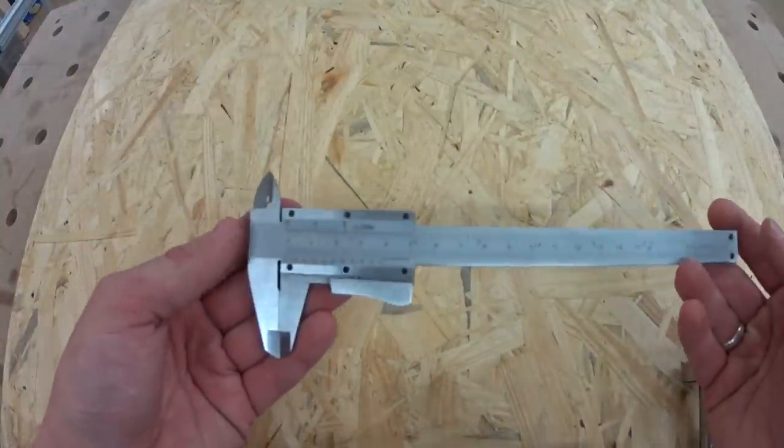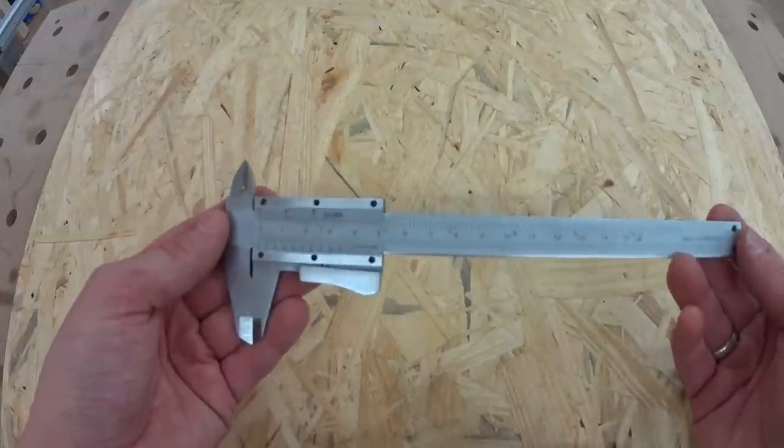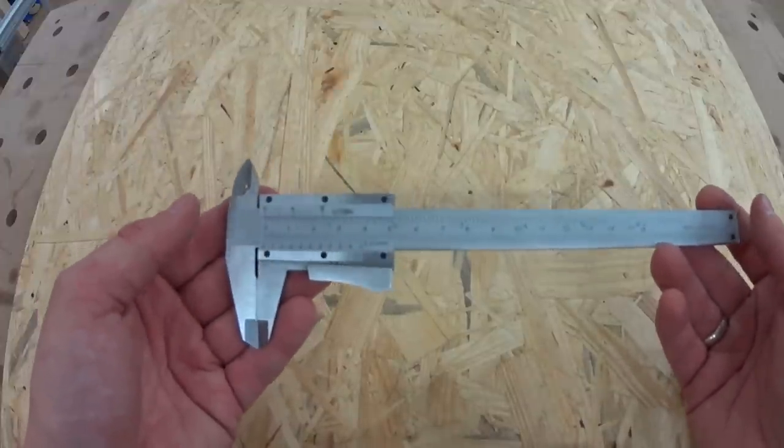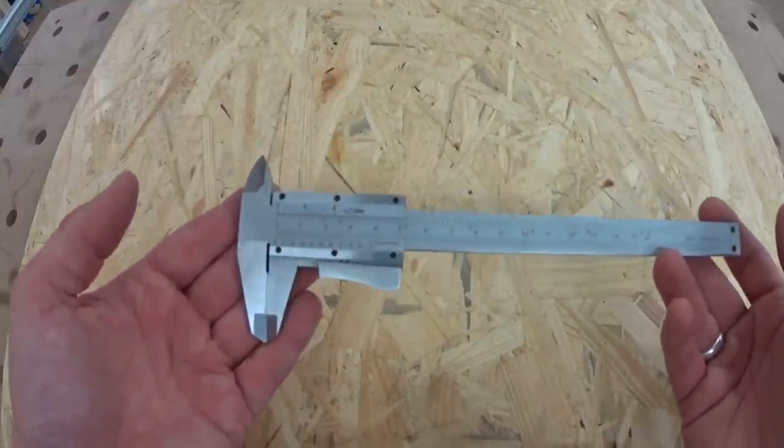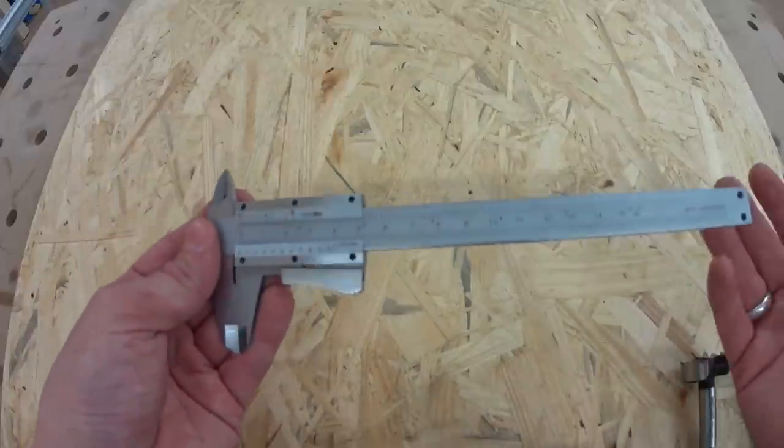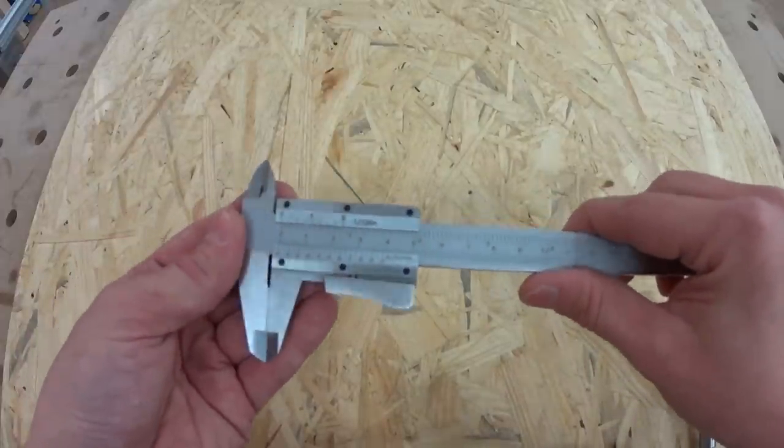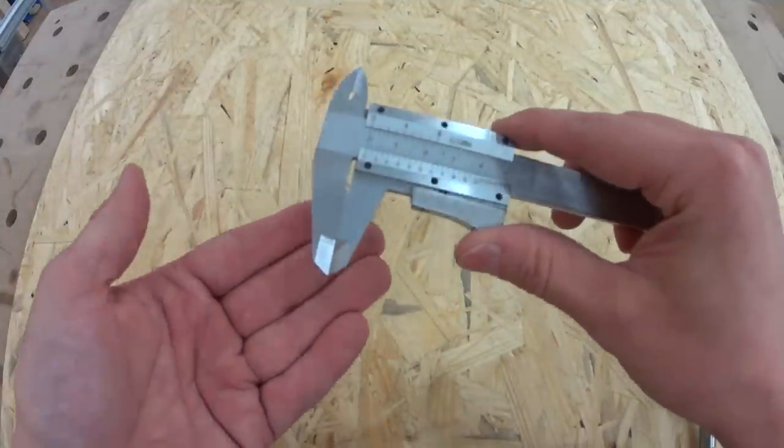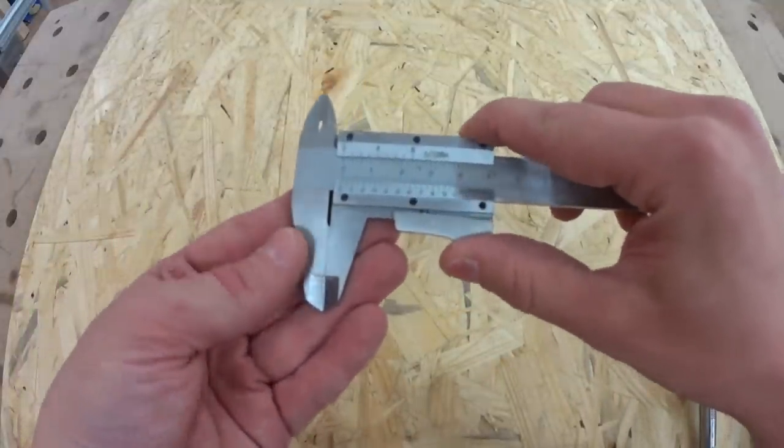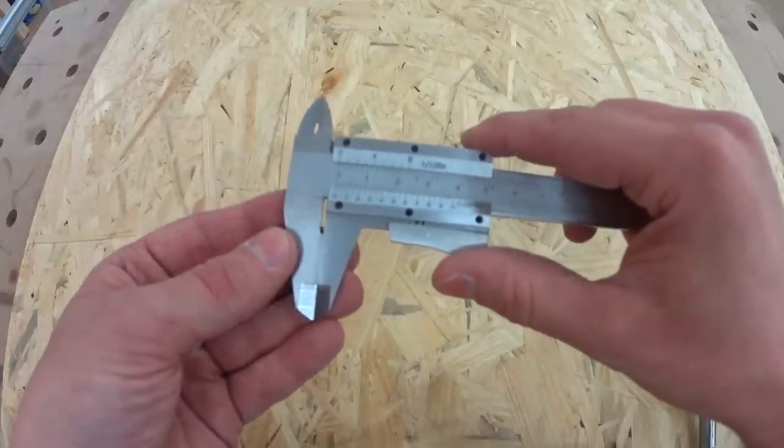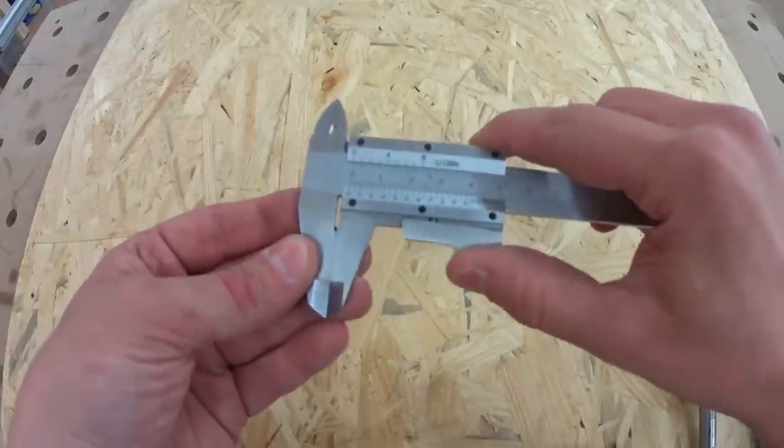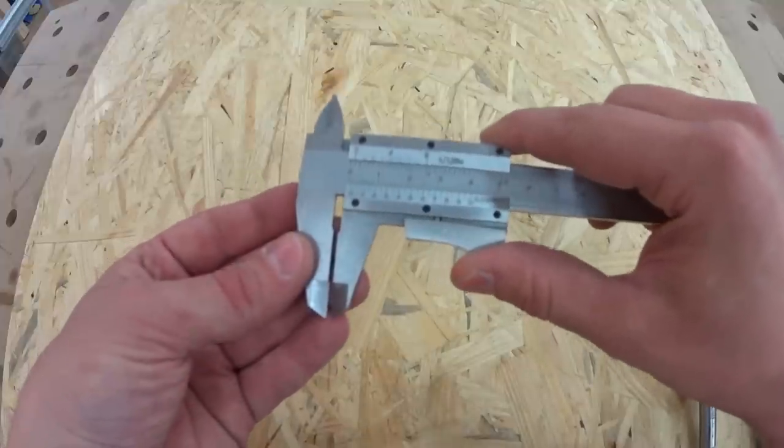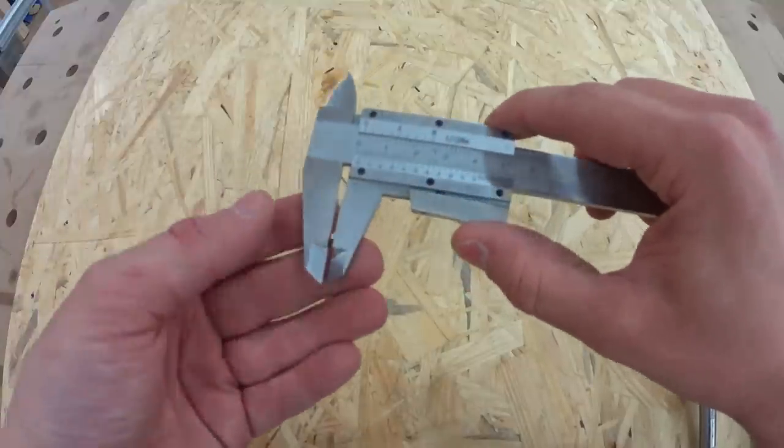You can get them in different material grades. You can get some made out of plastic if you don't have to do accurate measurements and be more worried about the material you measure. If you have pretty much rather soft material you should use plastic ones to not damage the surface.